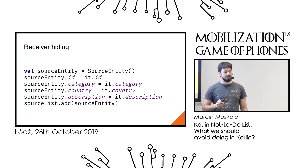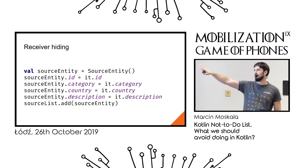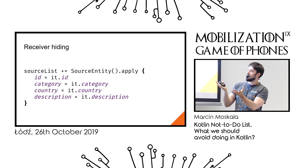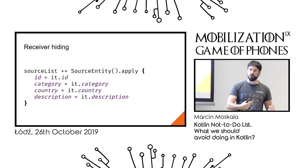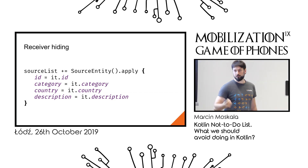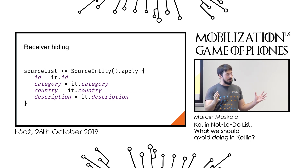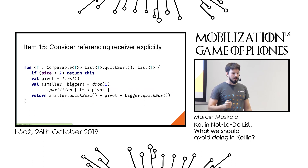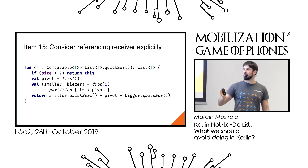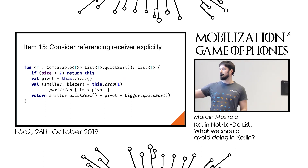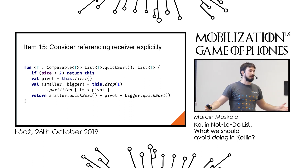Another thing we too often hide is the receiver. Using apply to set up an entity implicitly is concise and idiomatic — setting ID, category, country, and description all within apply is nice. However, when we hide receivers too much, you might not know where something comes from or what you're actually modifying. When writing extension functions, instead of hiding the receiver, making it explicit makes the code more readable and clarifies that 'first' and 'drop' come from the receiver, not from some outer scope.